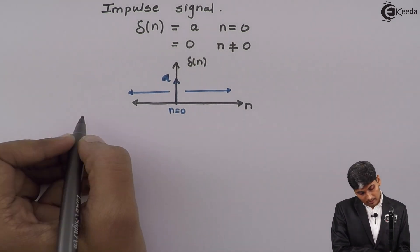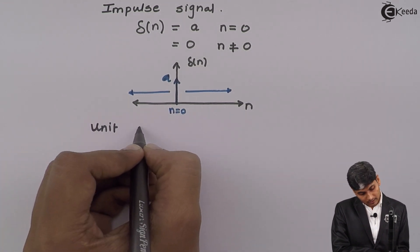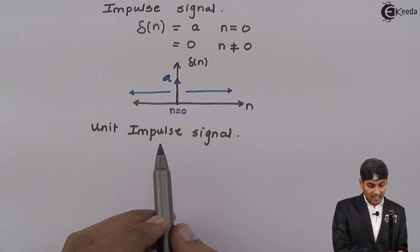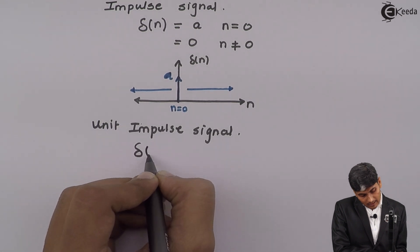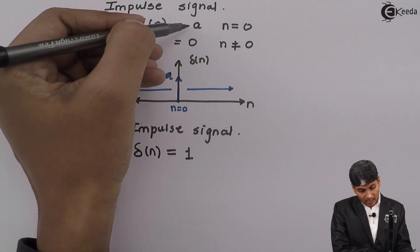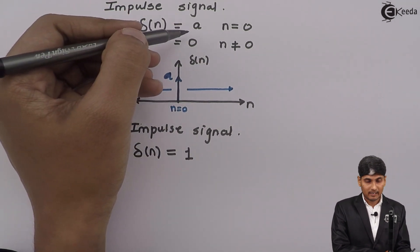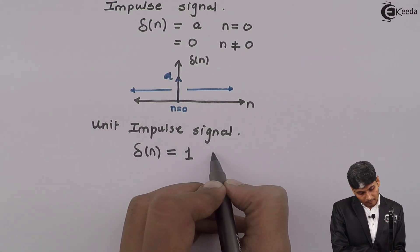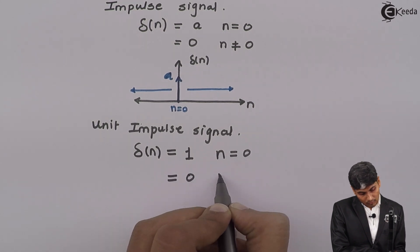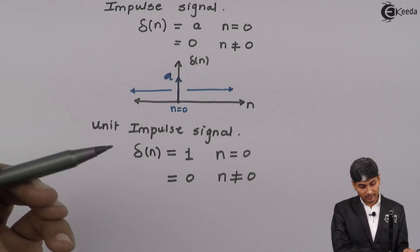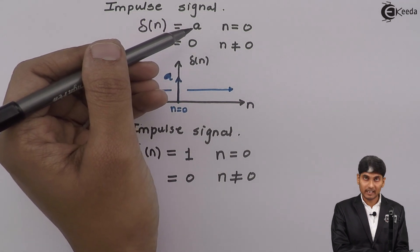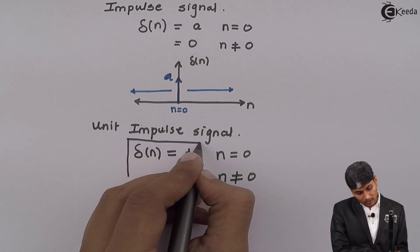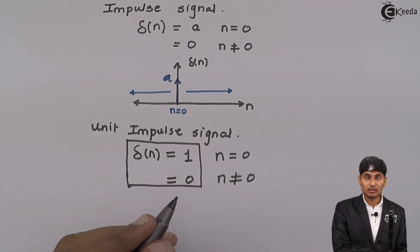Now let us see one more standard signal: the unit impulse signal. Unit impulse is a signal which has its amplitude as 1. Delta of n equals 1 for n equal to 0, and equals 0 for n not equal to 0. Instead of a, we write 1. A stands for any random amplitude, whereas 1 is specifically one unit height. The basic difference between impulse and unit impulse is that the impulse signal has an amplitude of a, whereas the unit impulse has a mandatory amplitude of 1.